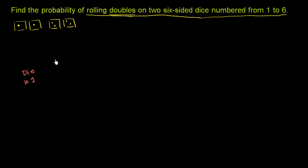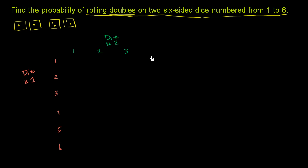Well, they're numbered from 1 to 6 — it's a six-sided die. So I can get a 1, a 2, a 3, a 4, a 5, or a 6. Now let's think about the second die. Die number 2 — exact same thing. I could get a 1, a 2, a 3, a 4, a 5, or a 6.